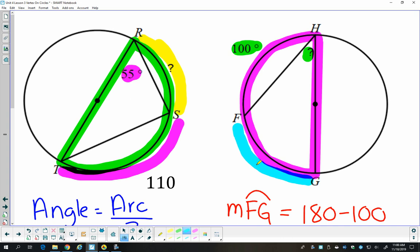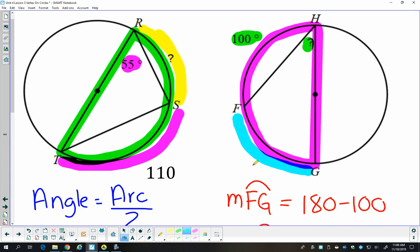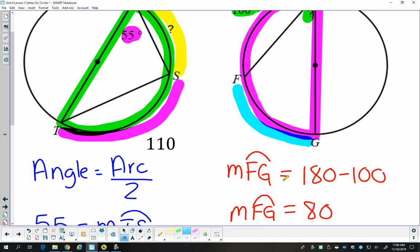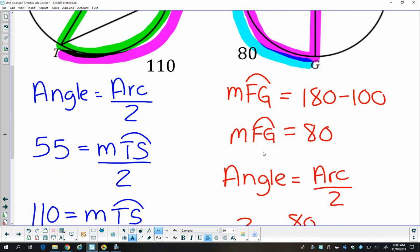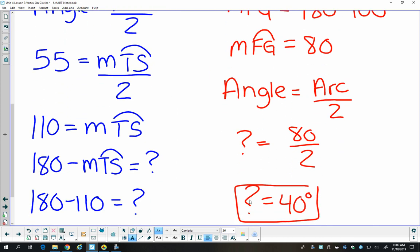So again, we have a situation where I can subtract an arc from 180. I can find the measure of FG by doing 180 minus that 100 degree arc. And I find out that FG is 80 degrees. And now I have an inscribed angle. I know its intercepted arc. And I can plug into the formula to find that angle to be 40 degrees.